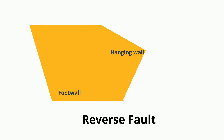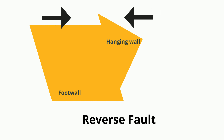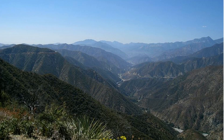A reverse fault occurs when the hanging wall moves up relative to the foot wall. These are called reverse because this is the reverse of what you would expect as a result of gravity. Reverse faults occur as a result of compression, which is stress that squeezes the rocks together. The San Gabriel Mountains are caused by reverse faults.